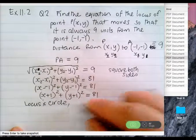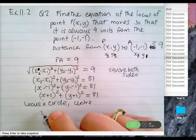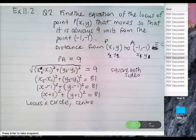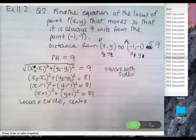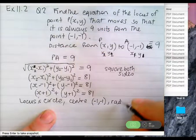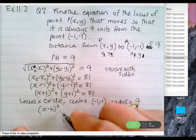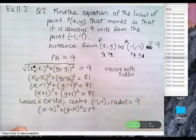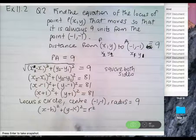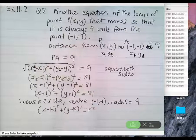The locus is a circle with center (negative one, negative one) — you can see it from the line above — and radius nine. It's of the format (x minus h) squared plus (y minus k) squared equals r squared. You should recognize that if you are moving so that you're a fixed distance from a point, whenever you move and you are a fixed distance from a point, then it is a circle.